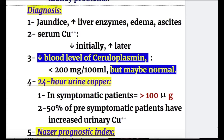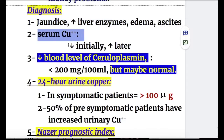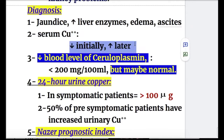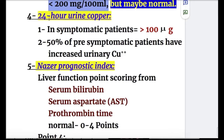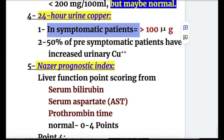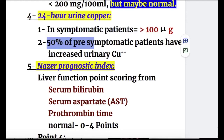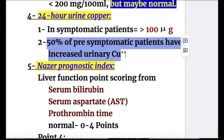For diagnosis of Wilson disease: number one, clinical features — jaundice, increased liver enzymes, edema, ascites. Number two, serum copper — decreased initially but increased later. Number three, decreased blood level of ceruloplasmin — less than 200 mg per 100 ml, though it may be normal. Number four, 24-hour urine copper — more than 100 micrograms in symptomatic patients, and 50% of pre-symptomatic patients have increased urinary copper excretion.